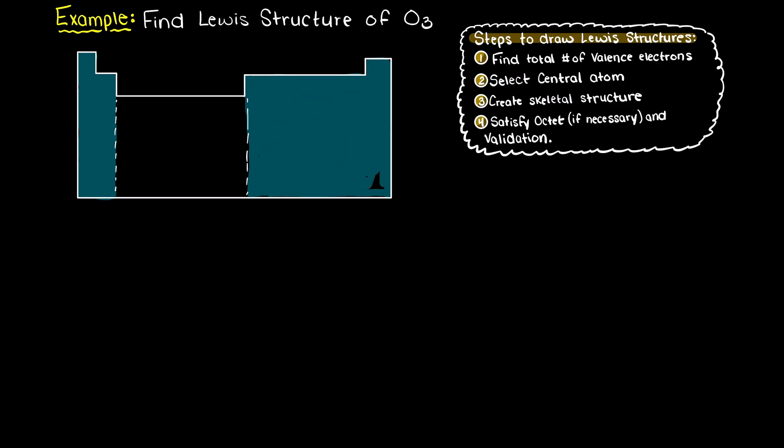First we need to find the total number of valence electrons that are present within our compound. Remember our trick to easily remember how many valence electrons an atom in groups 1a to 7a has. We look at the group number, the column that our atom resides in, and that will tell us the number of valence electrons that atom will have in its neutral state.